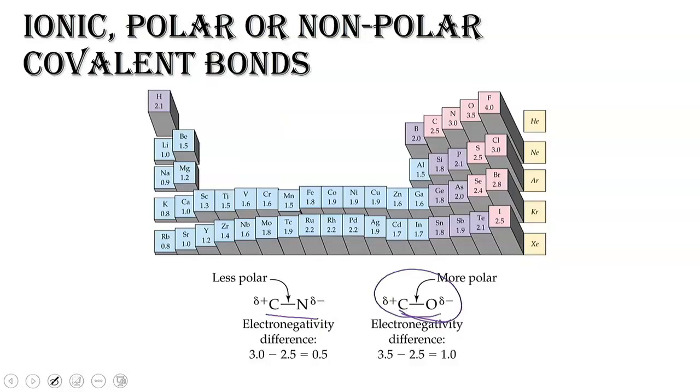Now, when you're calculating electronegativity differences, make sure that you put the largest electronegativity first. We cannot have negative values. Now, what is this 0.5, 1.0? What does this have to do with the ionic versus polar covalent versus plain covalent?